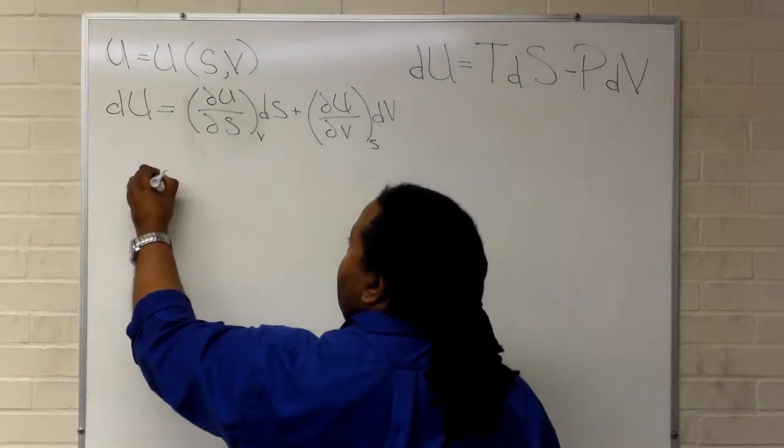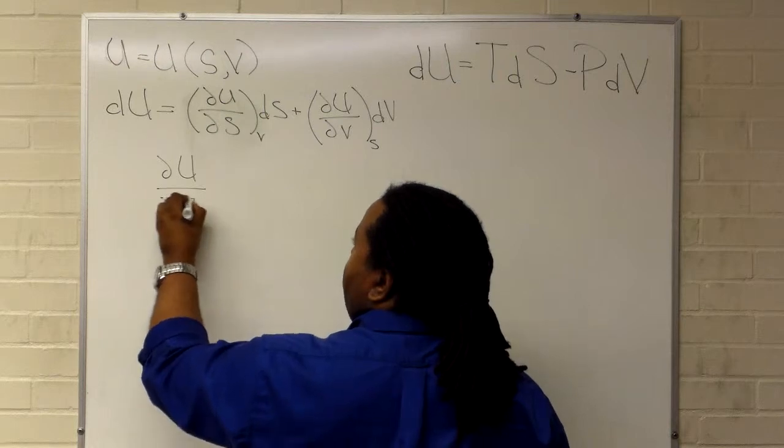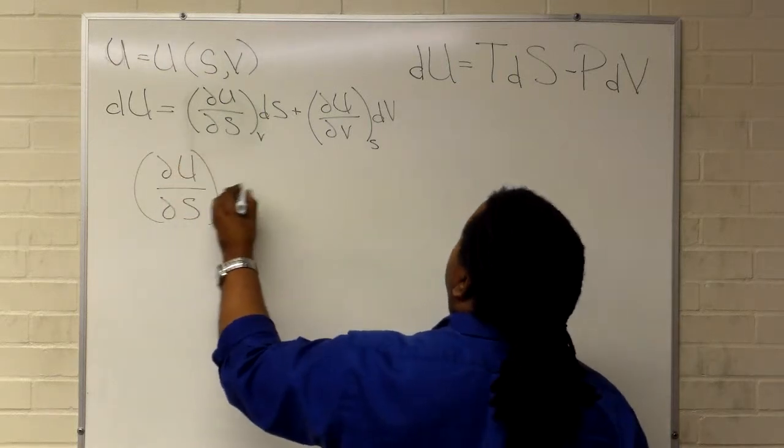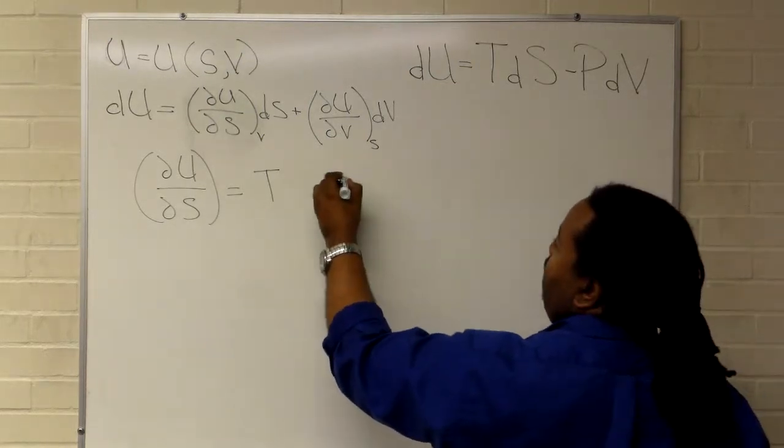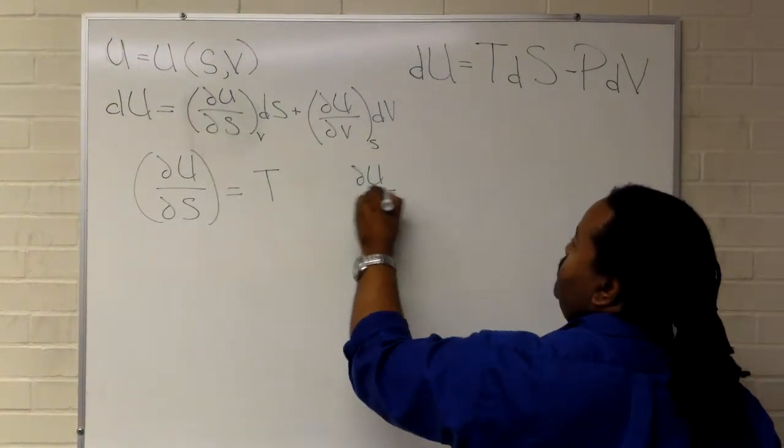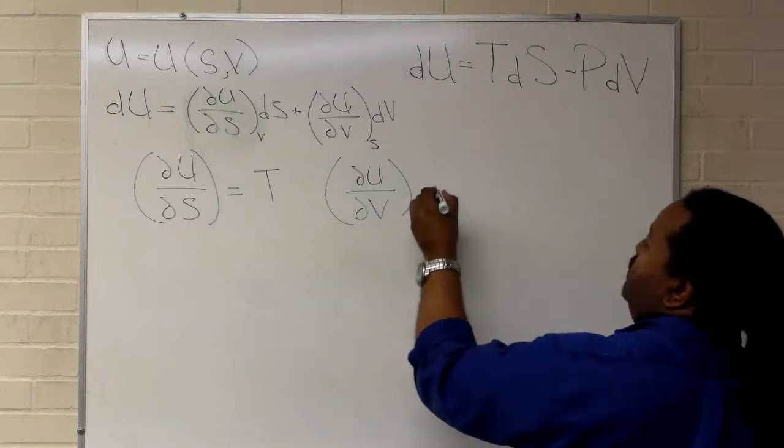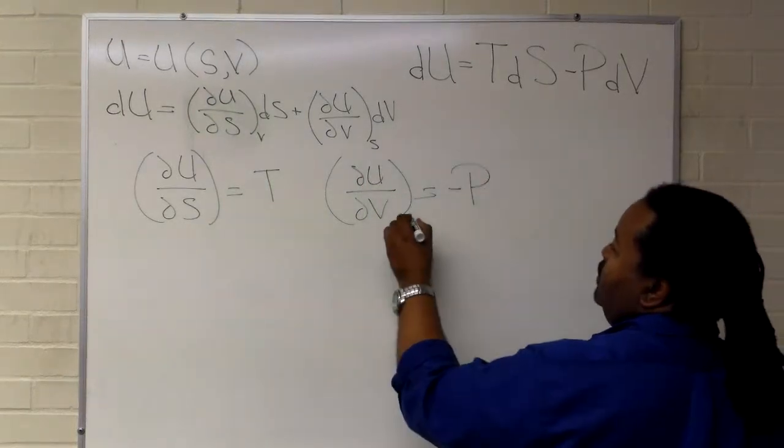So we can write out that partial u partial s is equal to the temperature, because that's our ds portion, and that partial u partial v is going to be equal to minus p.